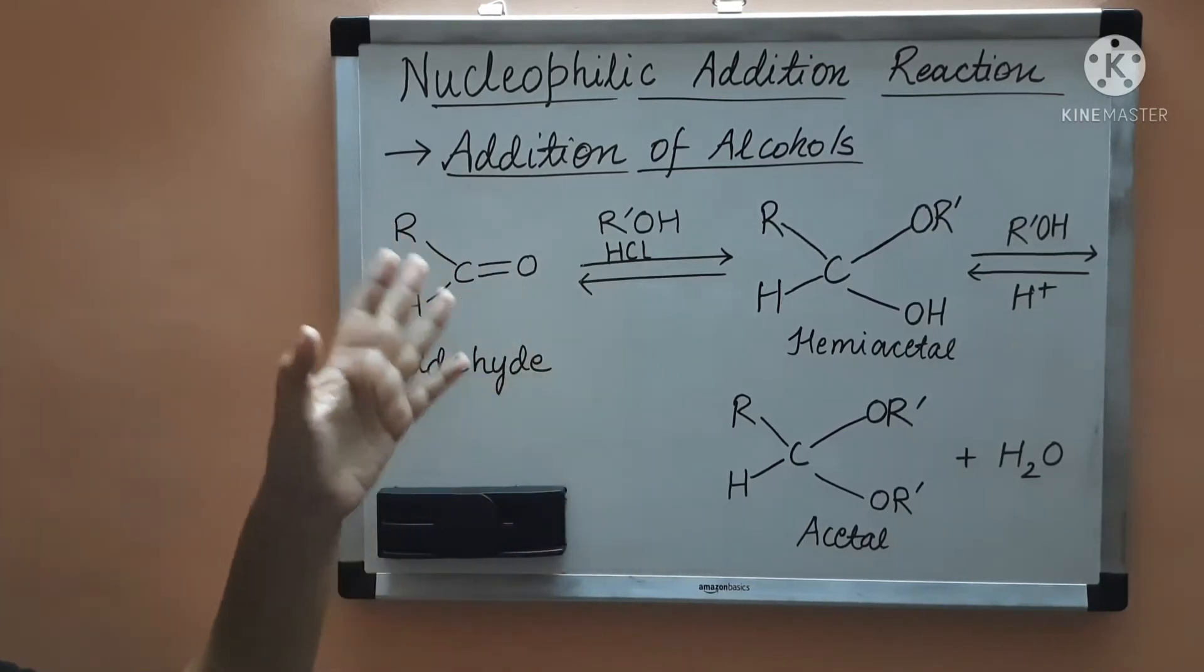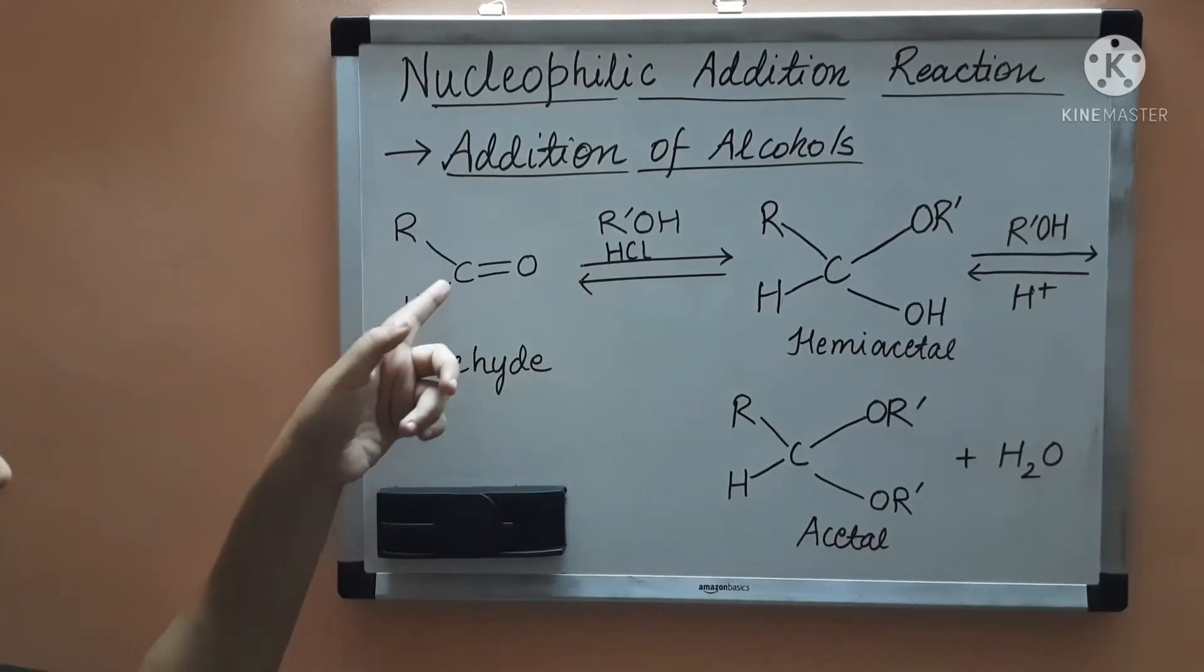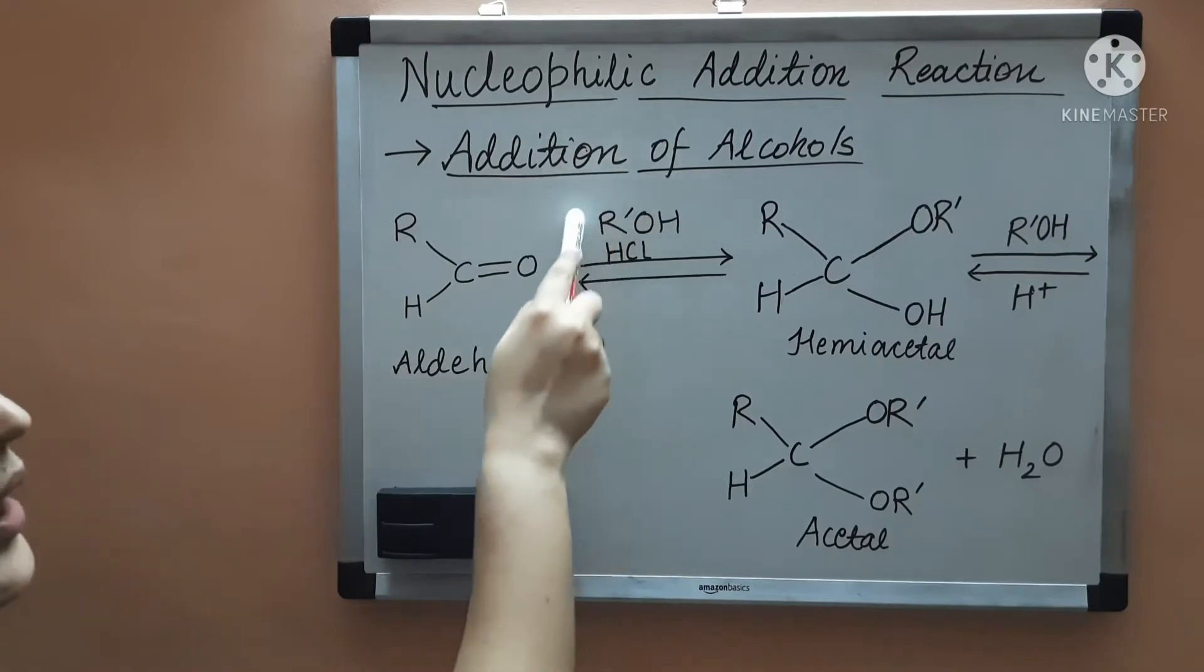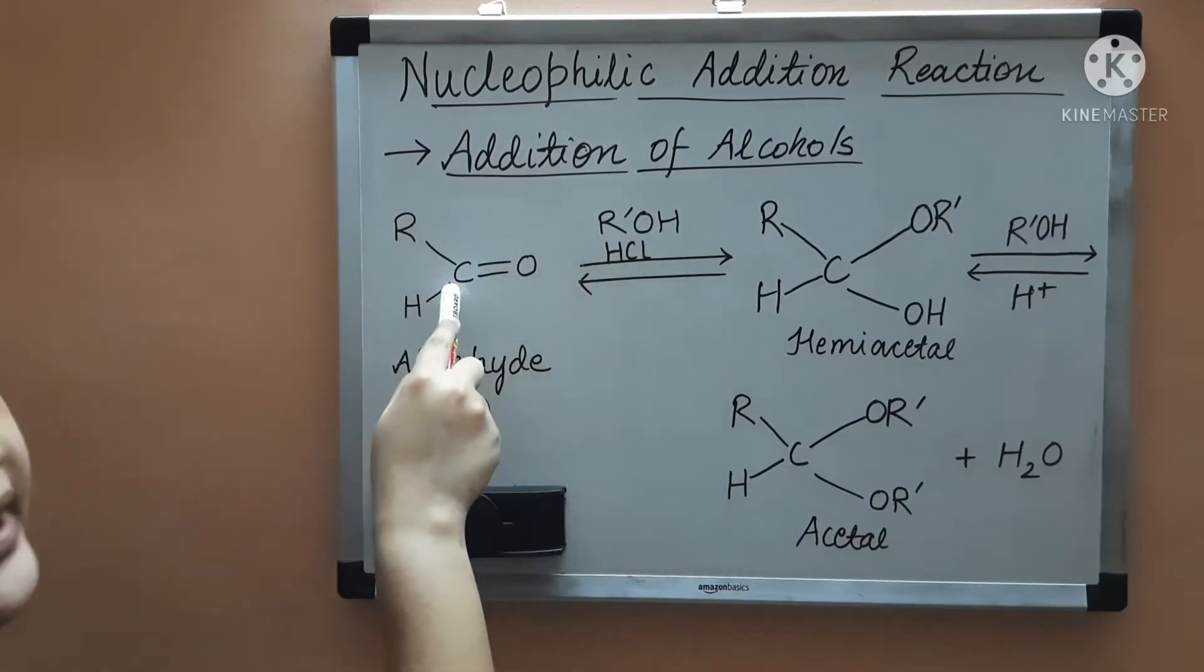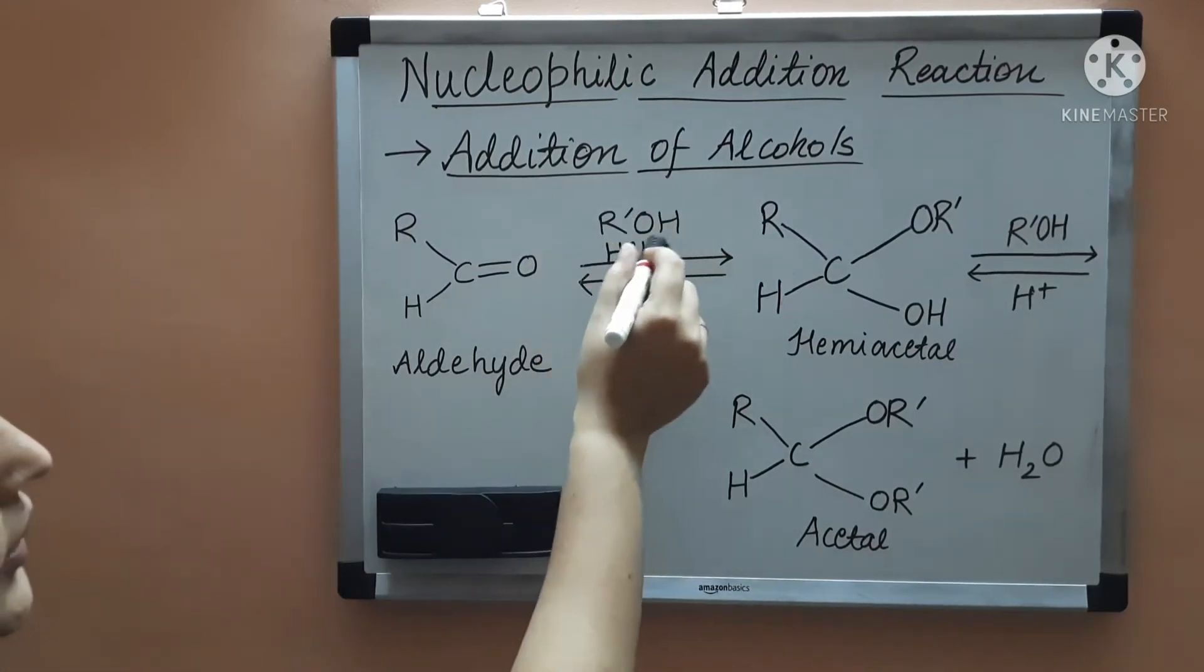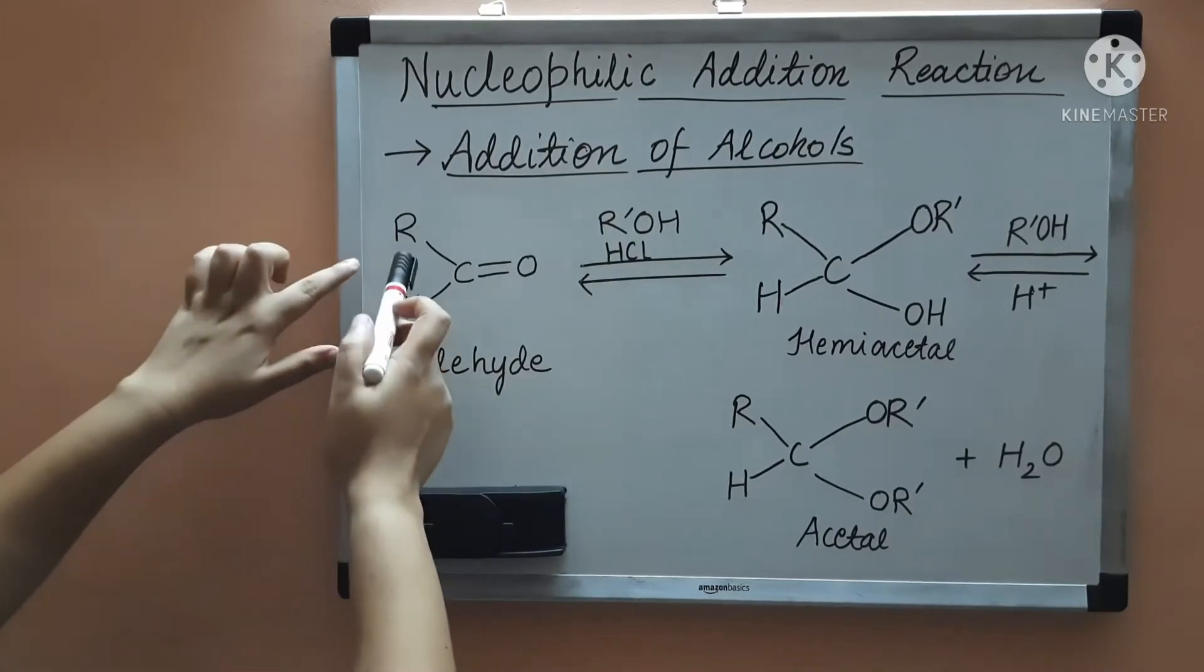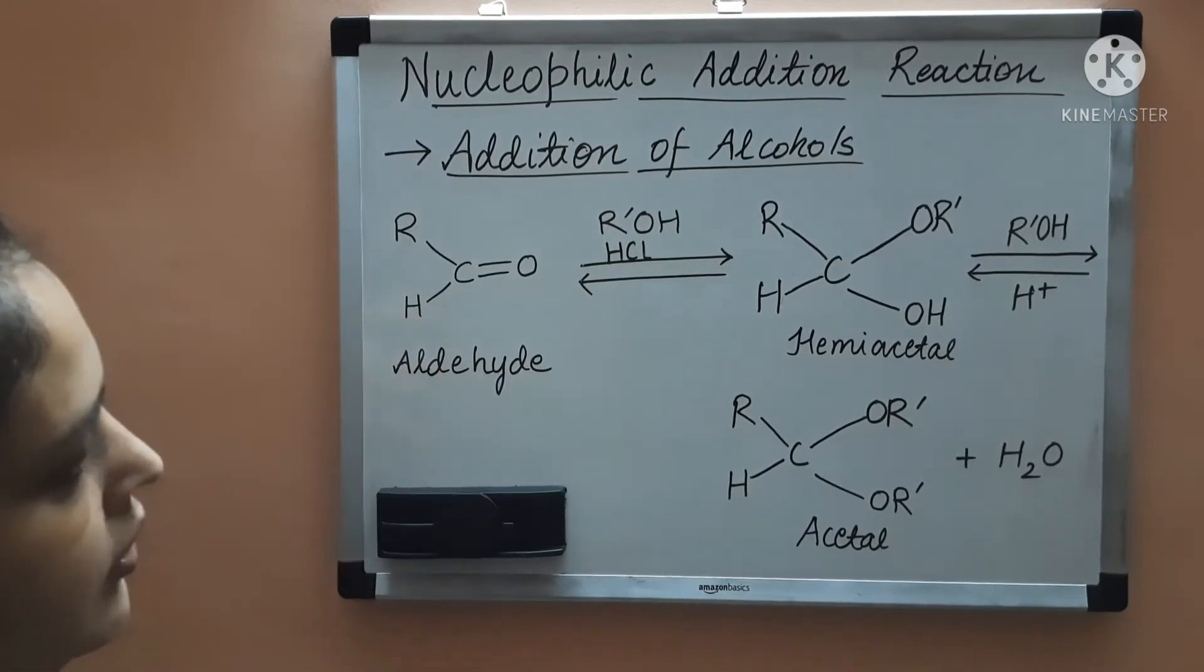Why? Because this HCl will increase the electrophilicity of carbon atom and therefore the OR' negative will attack the carbonyl carbon very easily. So when you add the R' OH where R' is another alkyl group different from this alkyl group, then what will be formed?